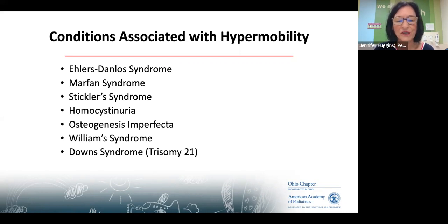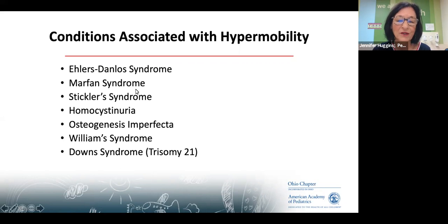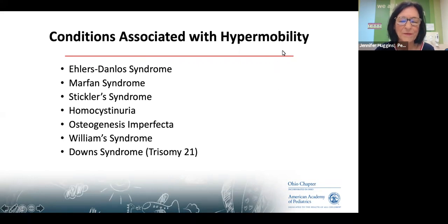Williams syndrome is something you would be alerted to probably before rheumatology. With Down syndrome, it's really that they have very low tone, but they will look like someone who's hypermobile.